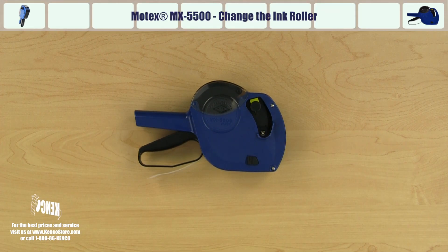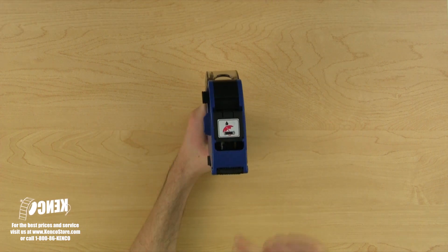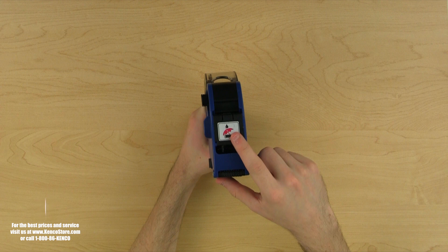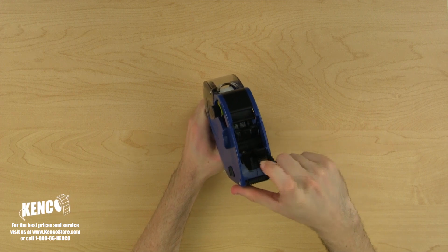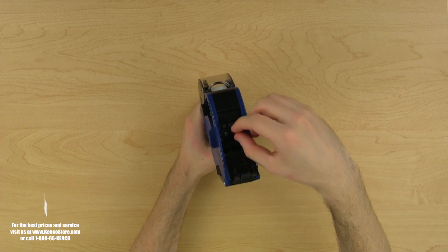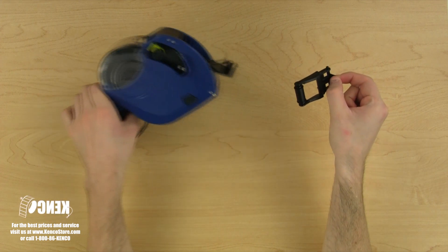Now that we know how to properly load and adjust the Motex MX5500 label gun, let's learn how to change the ink roller. On the front of the gun, you will see the ink roller assembly door. The first thing we need to do is lift up on the latch and expose the ink roller assembly. You will see a black plastic grip protruding from the ink roller assembly. Grab it and lift up to remove the ink roller assembly. It should come out freely without any resistance.